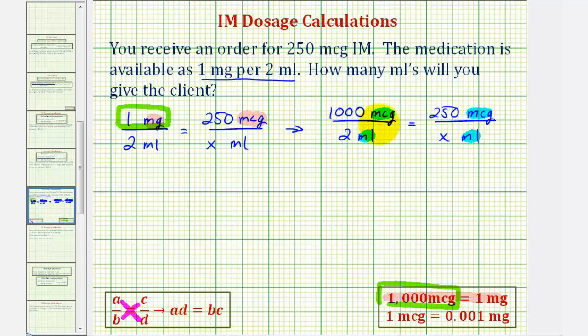So now we can cross multiply and solve for X. When cross multiplying, we'll leave off the units.